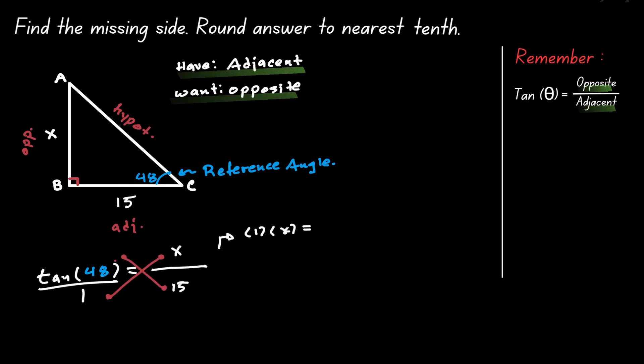Now we're going to multiply 15 times the tangent of 48. We can simplify this expression: on the left, 1 times x is just x, and on the right, 15 times tangent of 48 — let's write this as 15 tangent of 48.